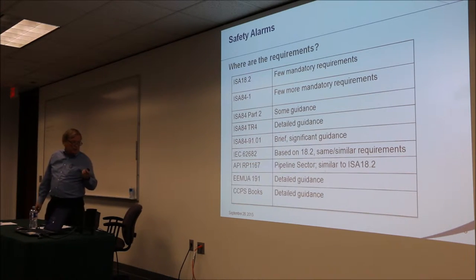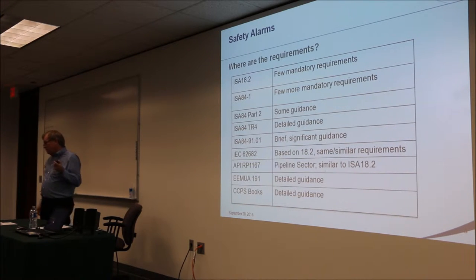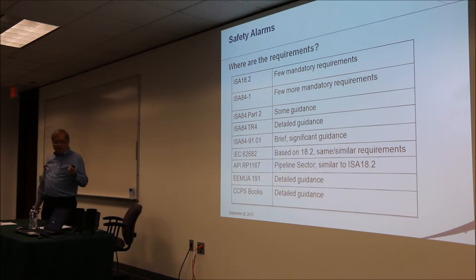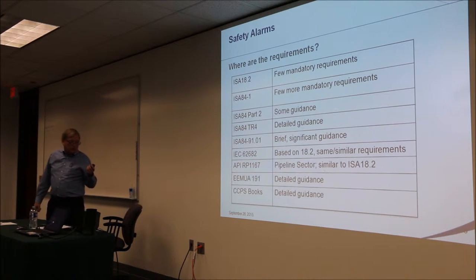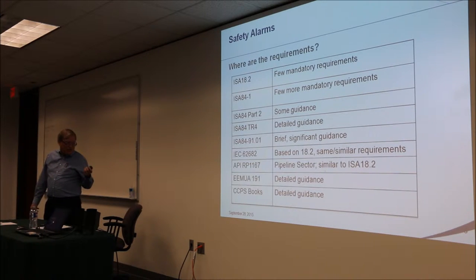9101 has a brief document with very significant guidance. IEC 62682 is the IEC version of the 18.2 alarm management standard, issued recently. Based on 18.2, there's not a whole lot of difference from the standpoint of safety alarms — there are more shall statements, but it's really not a significant difference. 1167 is a pipeline sector alarm management recommended practice, very similar to ISA 18.2.